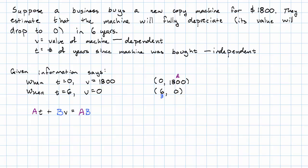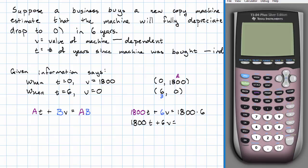My equation is going to be 1800t plus 6v equals 1800 times 6, or working out what 1800 times 6 is, is 10,800. 1800t plus 6v is 10,800.